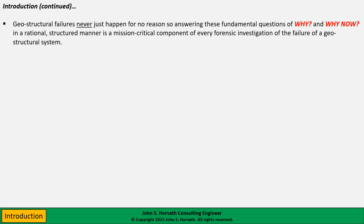It's important to understand that geostructural failures never — and I mean never — just happen for no reason. Answering the fundamental questions of why and why now, in a rational, structured manner, is a mission-critical component of every forensic investigation. This is important because it is not uncommon, for example when a water main fails, for a government bureaucrat to go before the press and say these things happen, we don't know why. The reality is it's simply because the bureaucracy doesn't want to invest the time and resources into performing an adequate forensic investigation.